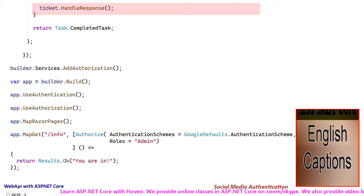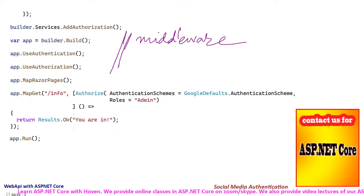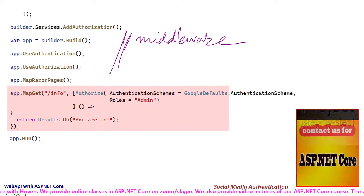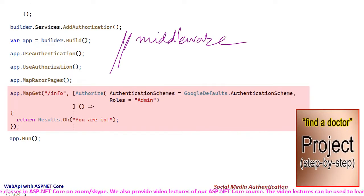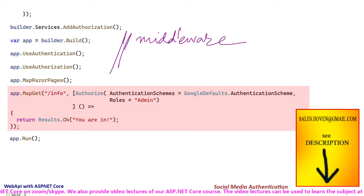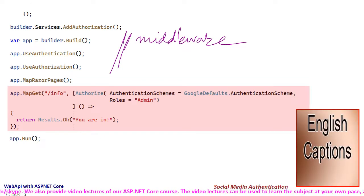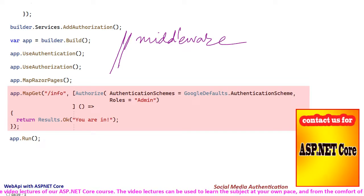After that we have the usual lines for configuring the middleware. Towards the end, we have a Web API that requires authentication with the Google authentication scheme. The Web API also sets the role property to restrict access to users of an admin role.